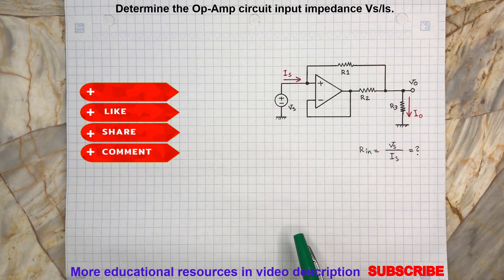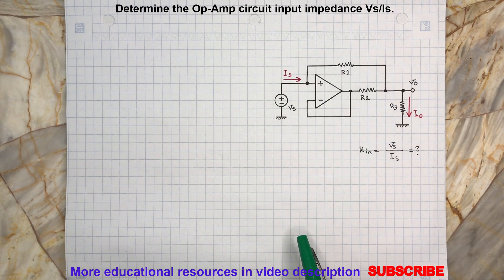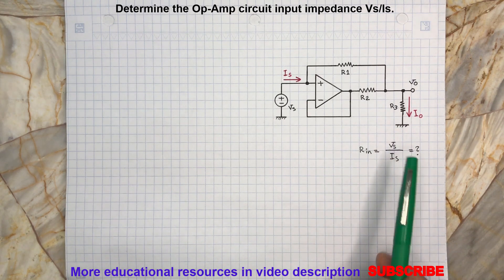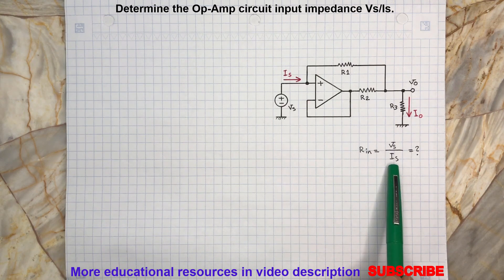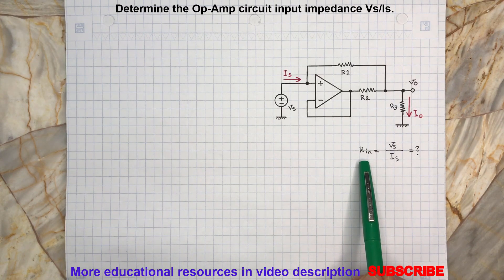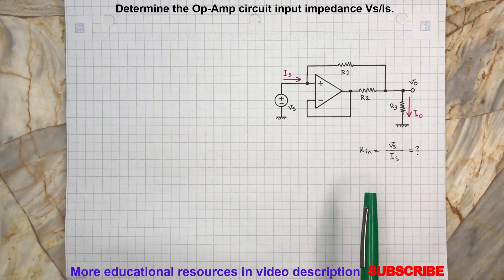Hello and welcome back to another video. Consider the following op-amp circuit. We are going to determine the input voltage to input current, which is also called input resistance, for this op-amp circuit.